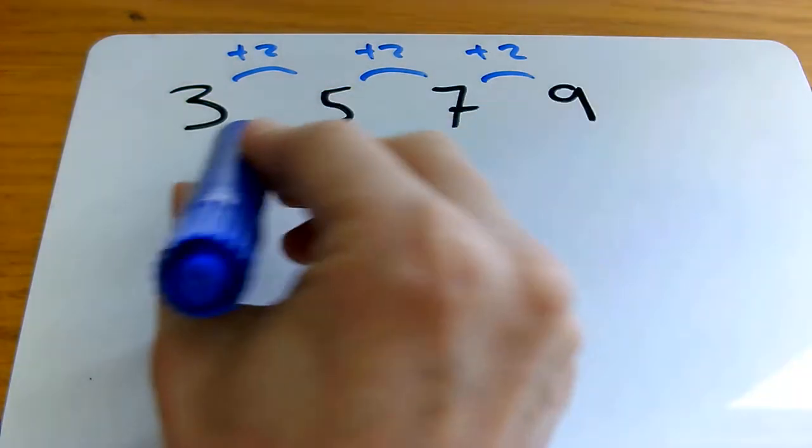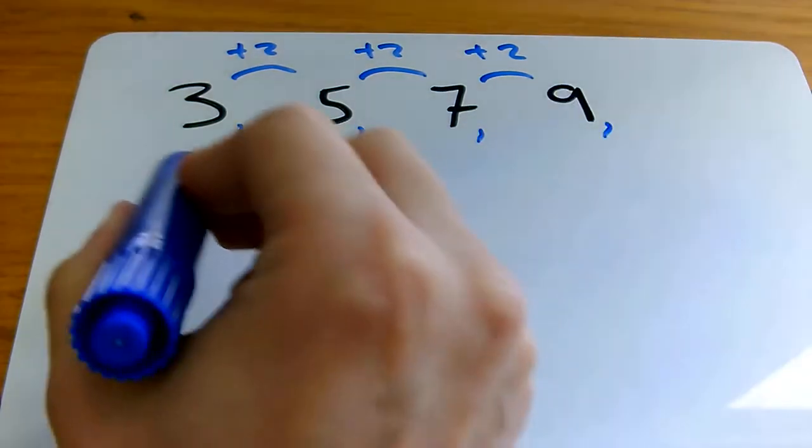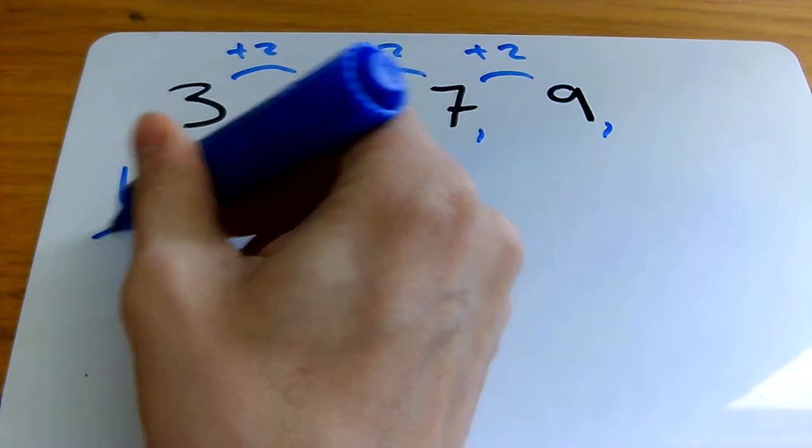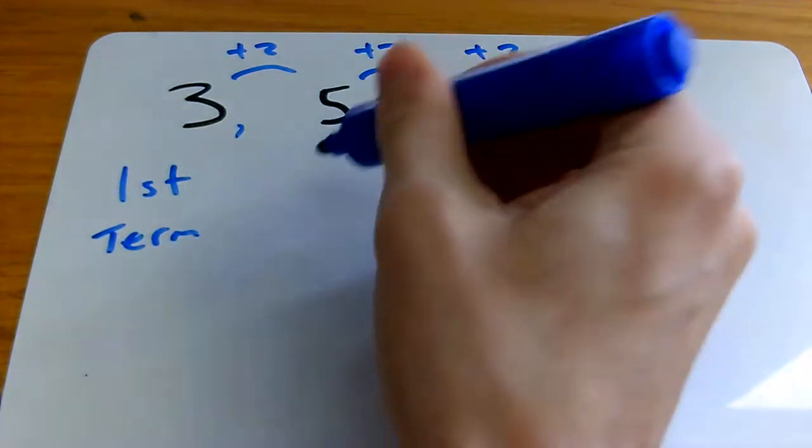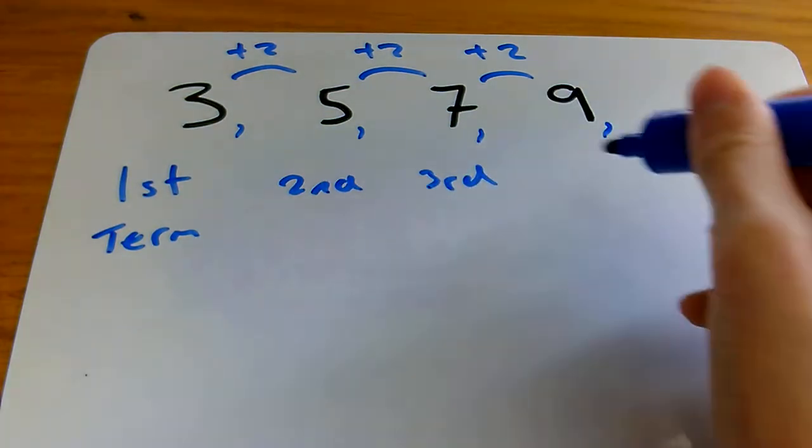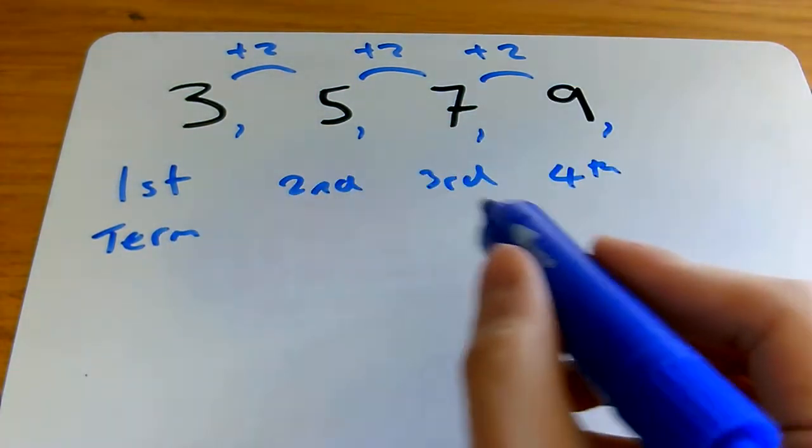Each of these parts of the sequence, the 3, 5, 7, and the 9, these are called terms. The 3 is the first term, 5 is the second, the 7 is the third, and the 9 is the fourth. They're all called terms.